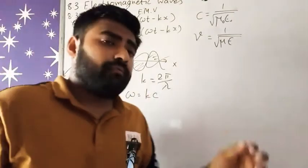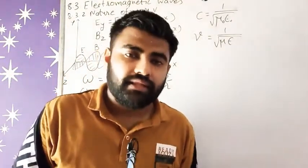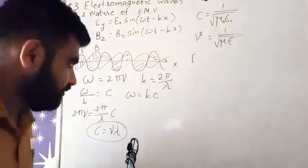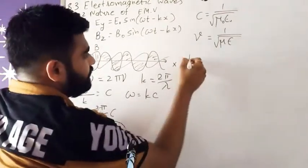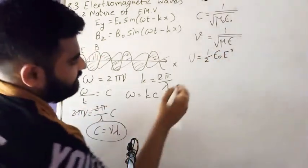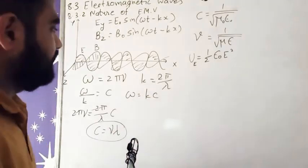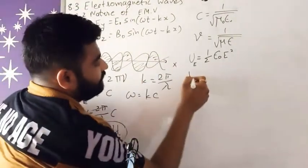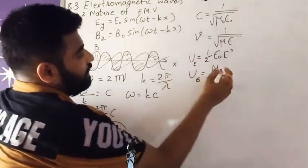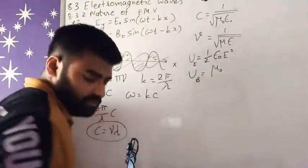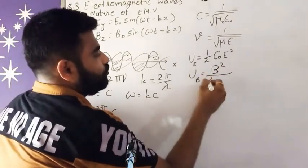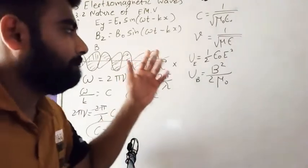So ye jo electromagnetic waves, us mein electrical energy kitni hai? So agar uski baat ki jaye, electrical energy—usko main U_E se denote karunga—is equal to ½ε₀E². So this is our electrical energy. Ye jo waves, ya uski electrical energy, waisi uski magnetical energy bhi hogi. And that is U_B = B²/2μ₀. What is B? B is here magnetic field.